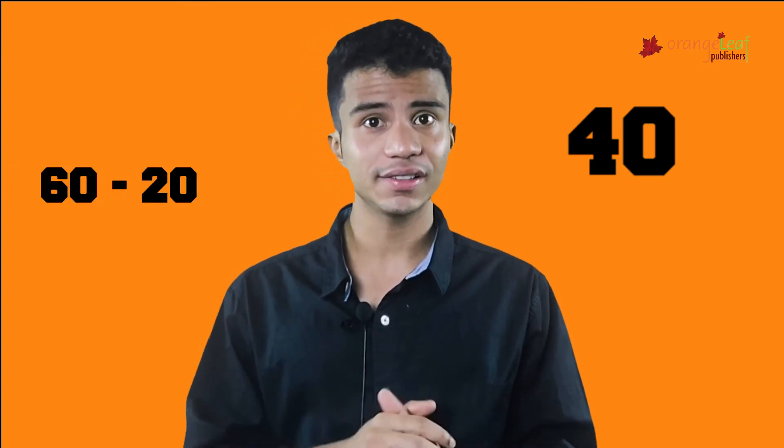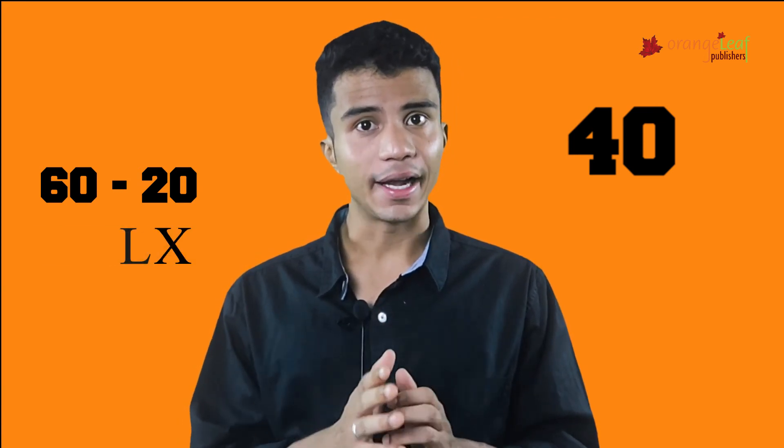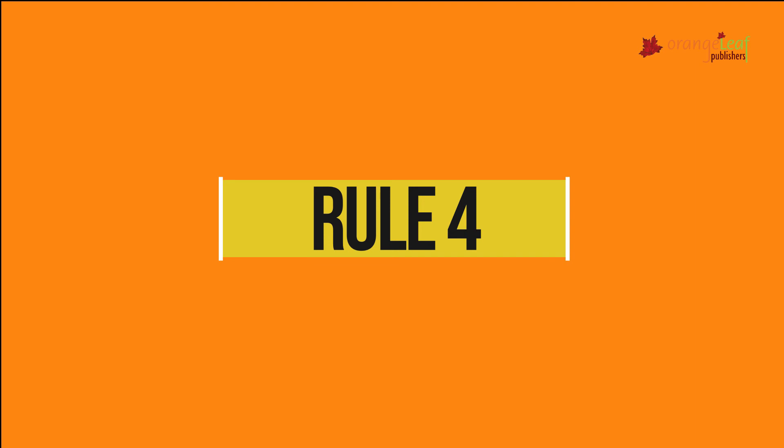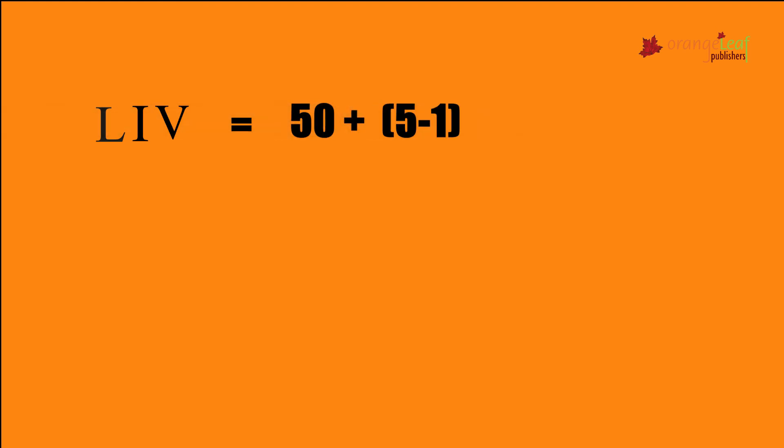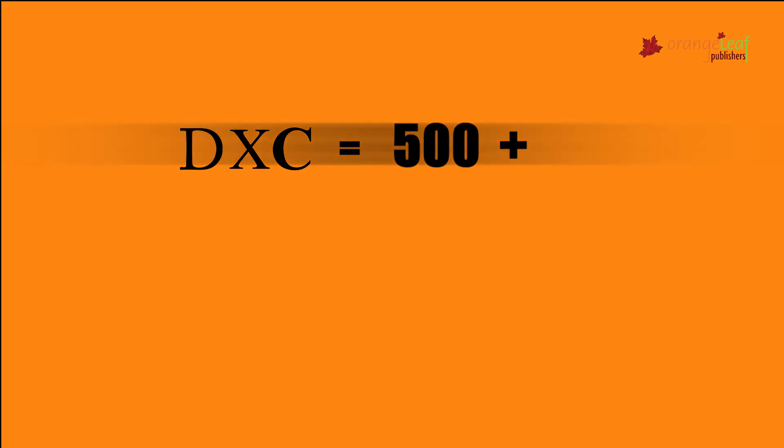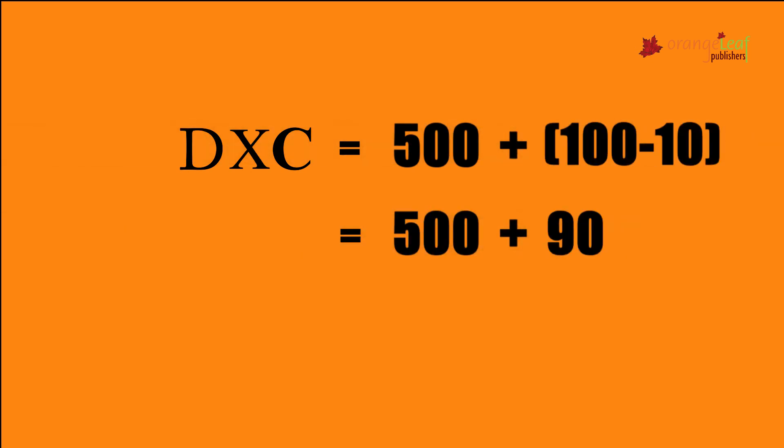Let's take a more complicated number: 40. We can represent 40 as XL, placing two X's to the left of L. When a numeral of smaller value lies between numerals of greater value, the smaller value is subtracted from the greater value after it. For example, LIV equals 50 plus 5 minus 1, which is 50 plus 4, equals 54. DXC: D is 500, whereas XC represents 100 minus 10, so it is 500 plus 90, which is 590.